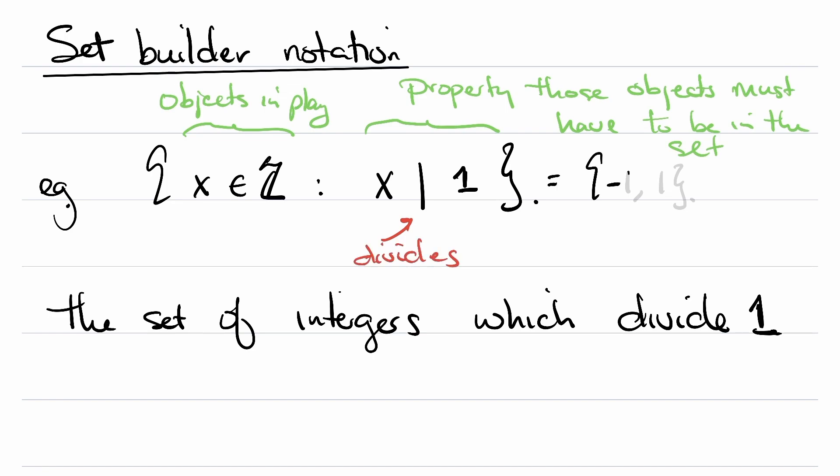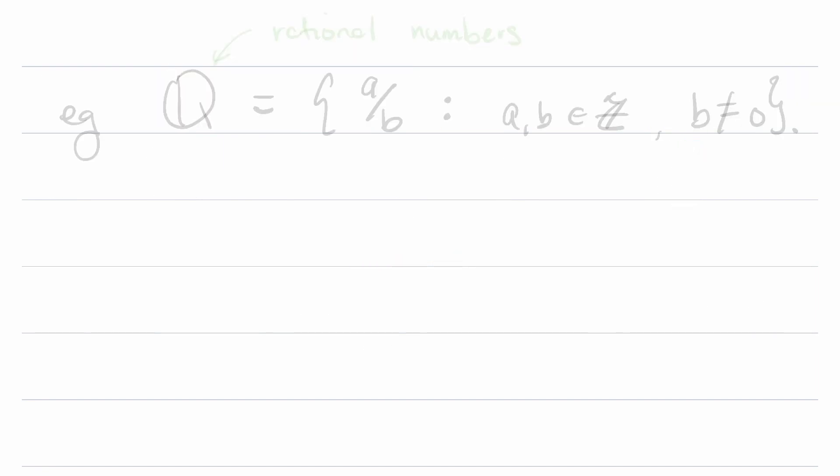Here's another example: the rational numbers using set builder notation. This is going to be the set of things that look like a over b, such that a and b are both integers, but b can't be 0. In the next lesson, we're going to be talking about how to count the elements in a set.